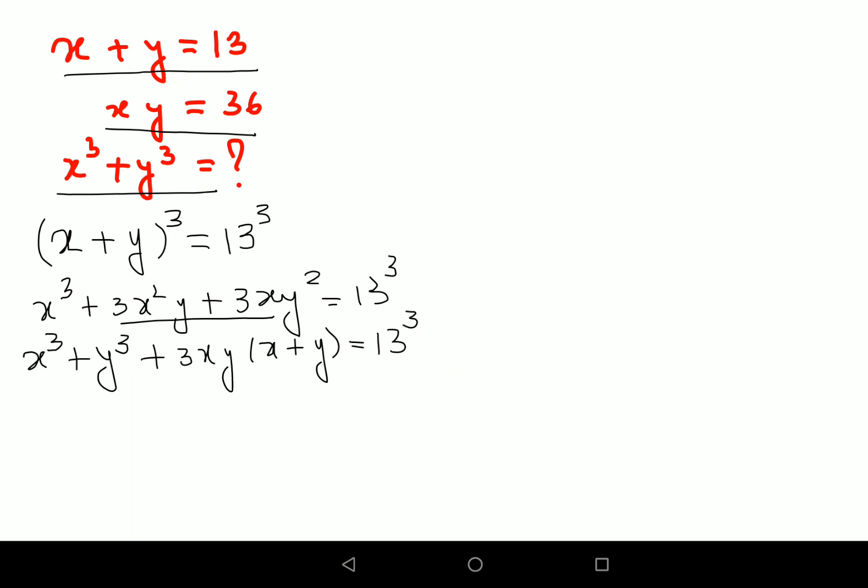And this is still equals to 13 cube. Now if you look closely, I know the value of xy which is 36. So I'll write x cube plus y cube as it is and here I'll write 3 into 36 into x plus y. Also I know the value is 13 and this is still equals to 13 cube.